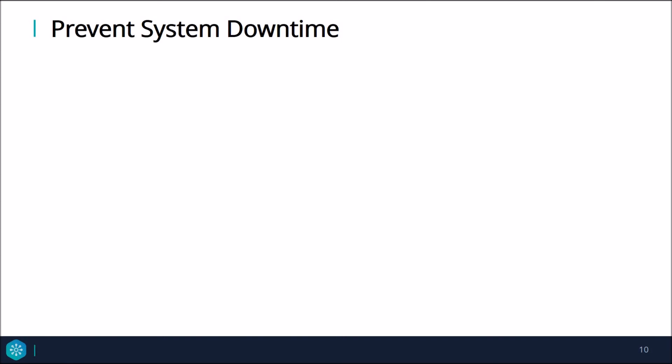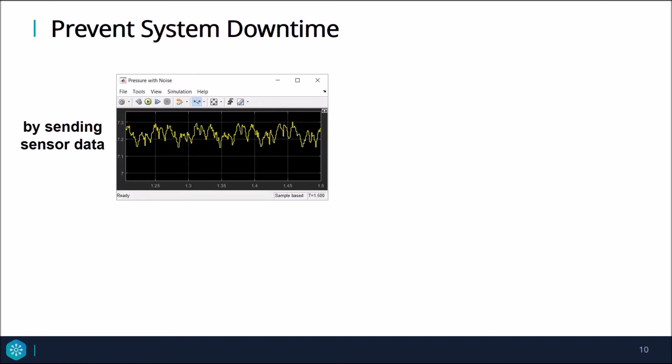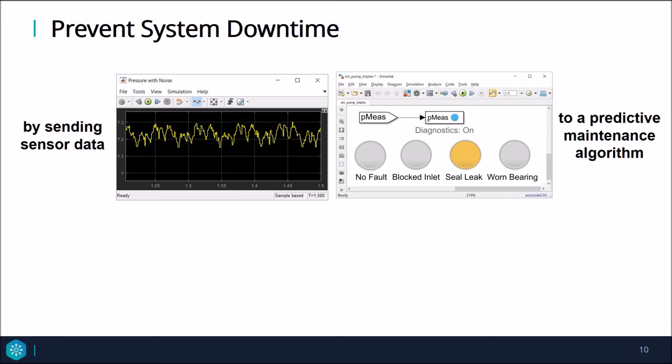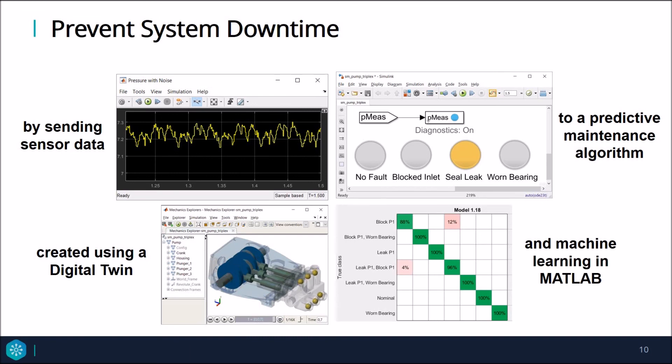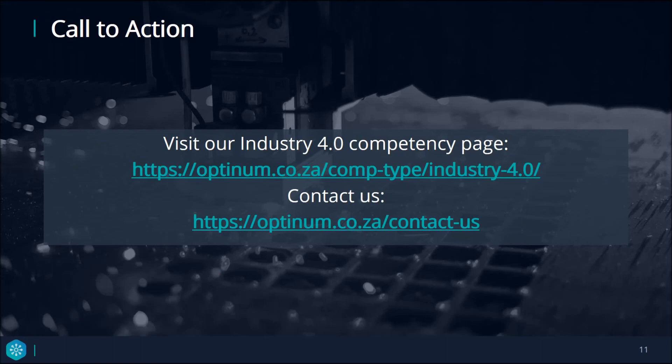In summary, I have shown how system downtime can be prevented by sending sensor data to a predictive maintenance algorithm created using a digital twin and machine learning in MATLAB. Thank you for listening to this webinar. To find out more about how to use predictive maintenance or digital twins in your digital transformation strategy, visit our Industry 4.0 competency page via the link below the video, or contact us about a feasibility study for predictive analytics in your system.